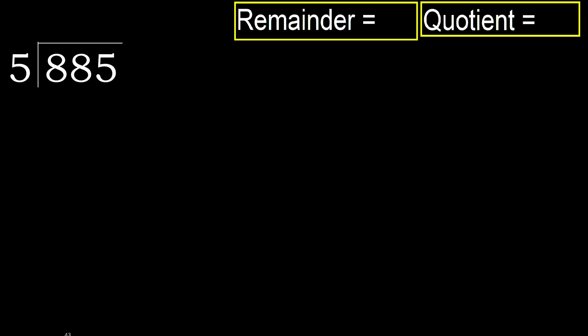885 divided by 5. 8 is not less, therefore work with 8. 5 multiplied by which number is nearest to 8 but not greater? 5 multiplied by 2 is 10, 10 is greater. 5 multiplied by 1 is 5, not greater. 8 minus 5 equals 3.